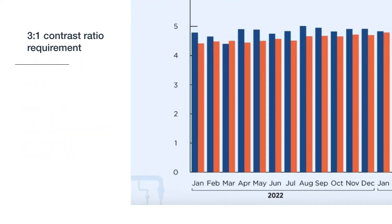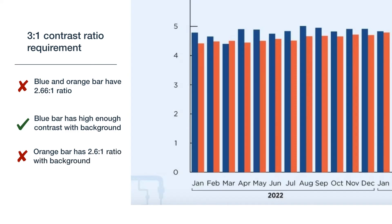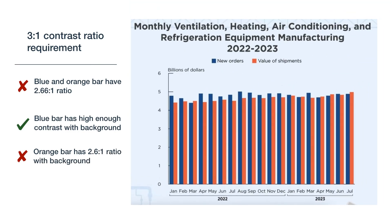The blue and orange bars' contrast ratio is 2.66 to 1, which doesn't meet the 3 to 1 requirement. The blue bar has a high enough contrast with the light blue background, but the orange bar only has a 2.6 to 1 ratio with the blue background, which again doesn't meet the 3 to 1 requirement. These colors would need to be adjusted so each one has a 3 to 1 contrast ratio with its adjacent colors.